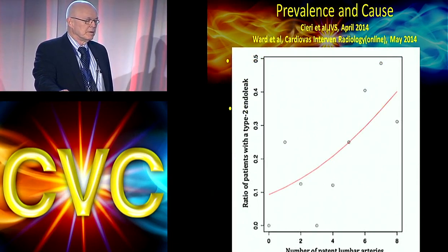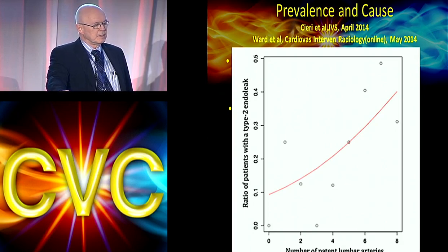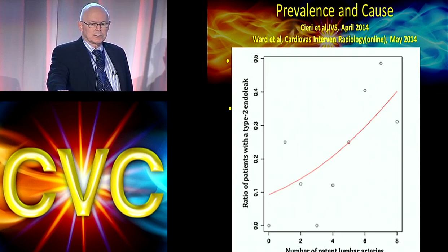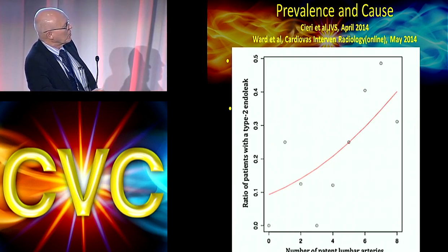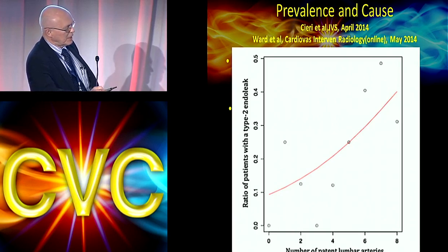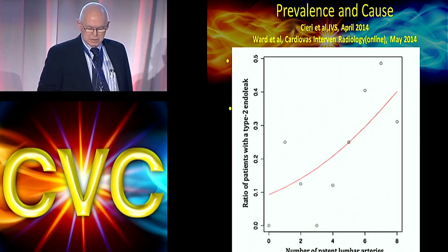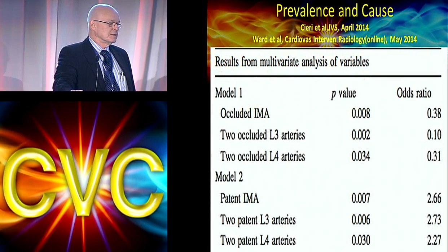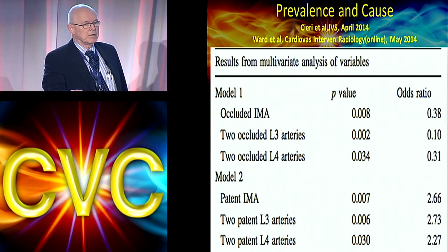From Ward's paper on the anatomy of type 2 endoleaks: the more open lumbar arteries, the higher the risk — up to almost 50% if many are open. Multivariate analysis confirms that occluded lumbar arteries and IMA result in quite low odds ratio of type 2 endoleak, while open vessels show a greatly increased, statistically significant risk.